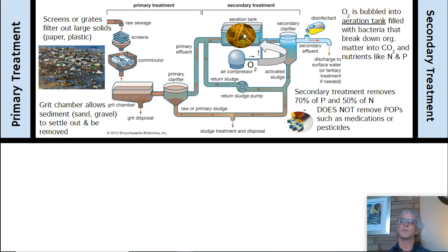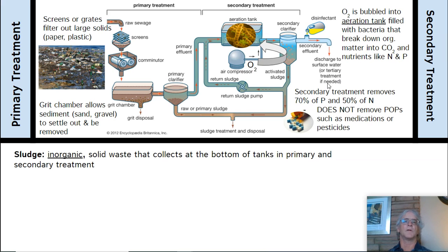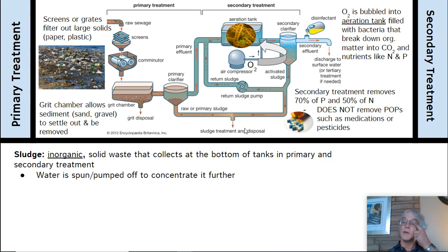Secondary treatment removes 70% of phosphorus and 50% of the nitrogen, but does not remove things like persistent organic pollutants (POPs), medications, or pesticides. The key term here is sludge — the solid waste that collects at the bottom of tanks in primary and secondary treatment. It is put into a centrifuge, spun, and pumped off to concentrate it further.